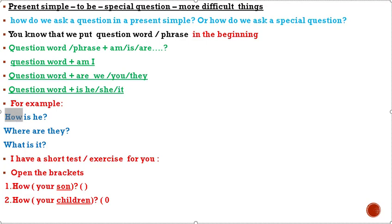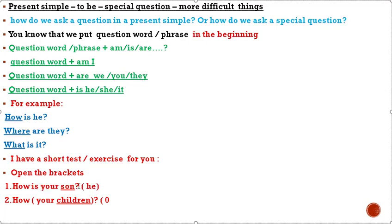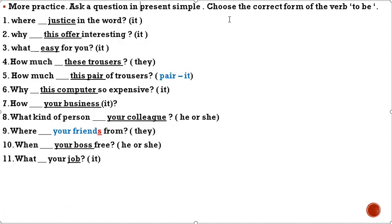I have a short test or exercise for you. Open the bracket and choose the correct form. Example: 'How ___ your son?' — 'son' means 'he', we use 'is': 'How is your son?' Next: 'How ___ your children?' — 'children' is plural, we use 'are': 'How are your children?'